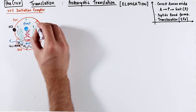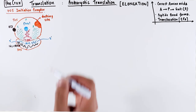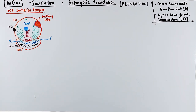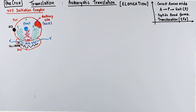Now I want to introduce the docking site, which helps position the 50S subunit onto the 30S subunit by interacting with the initiation factor 2 GTP complex, which we covered in the initiation video. This docking site is part of the BL12 protein, which is part of the 50S subunit.